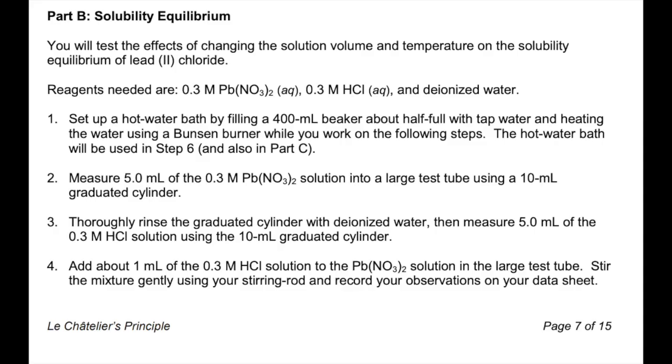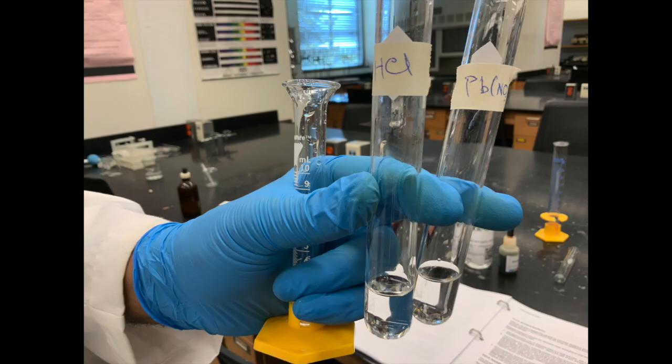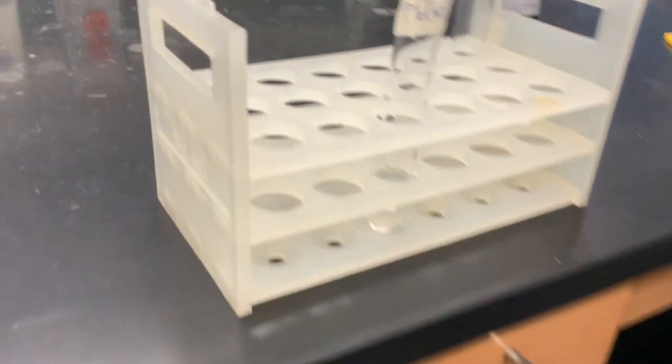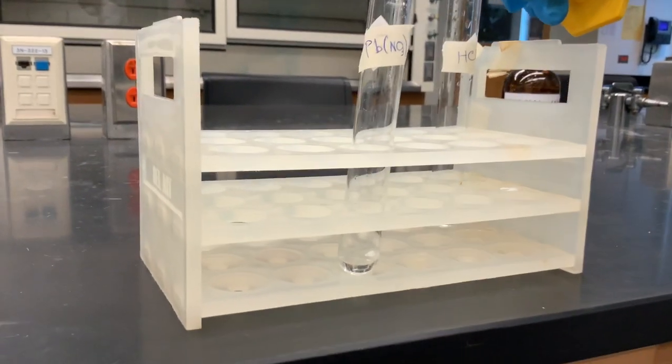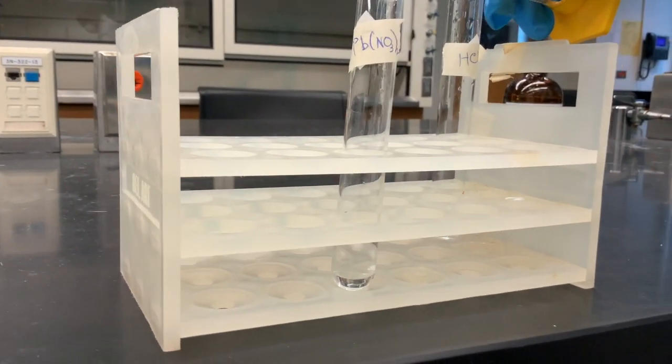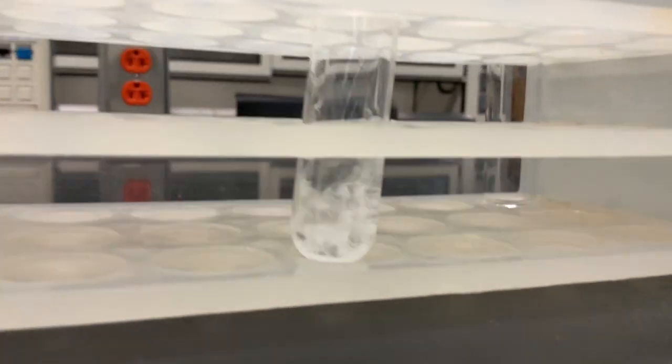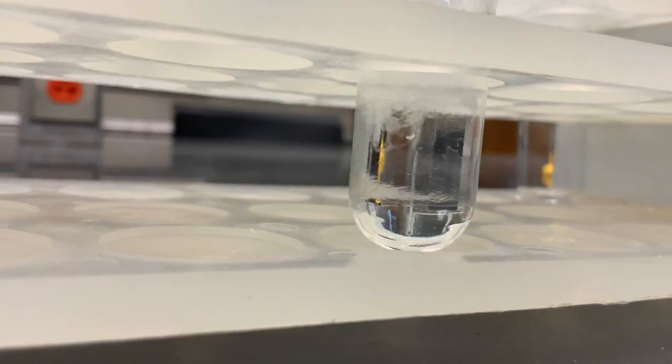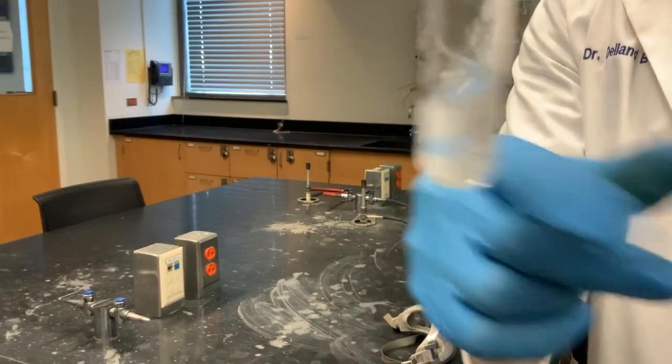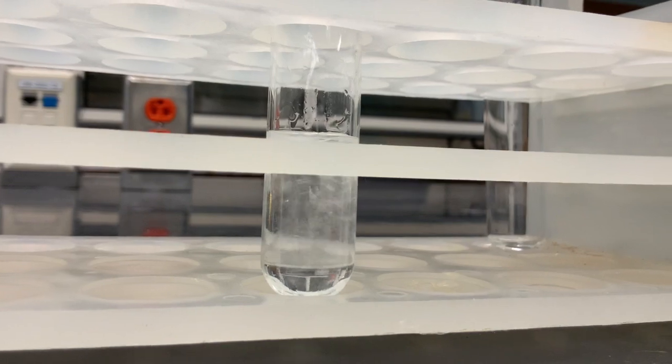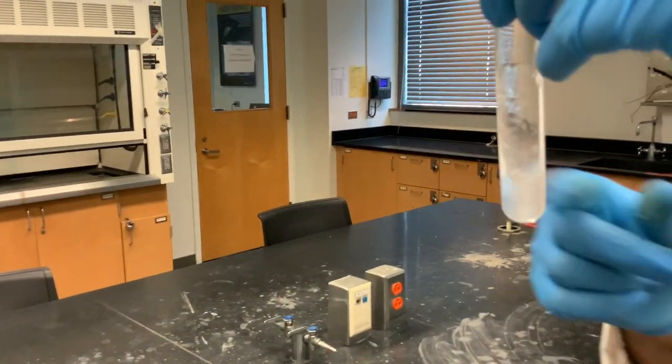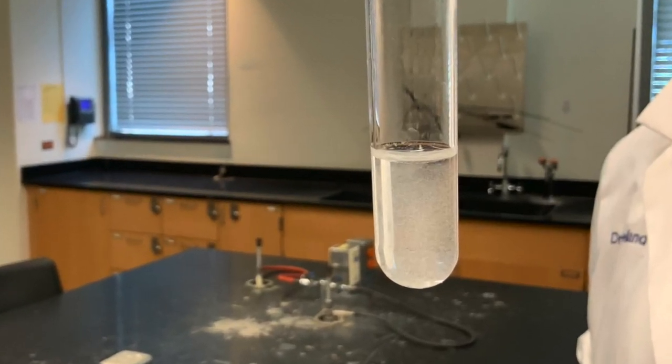We then move on to Part B, which explores the solubility equilibrium of lead chloride. Here we measured 5 ml each of 0.3 molar lead nitrate and 0.3 molar hydrochloric acid. We then add 1 ml at a time, the HCl solution, into the lead nitrate followed by gentle stirring. Observe what happens and record it in your lab report. We add another ml of HCl and then mix it again. Then we add another ml and stir it again. Record what you see in your lab report.